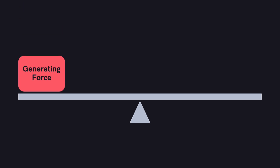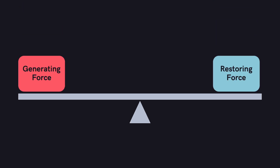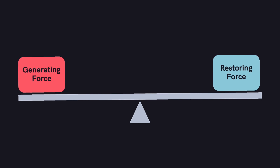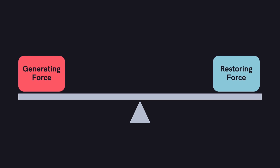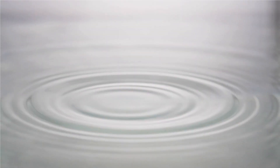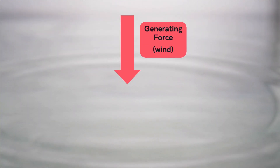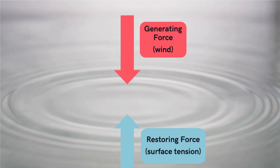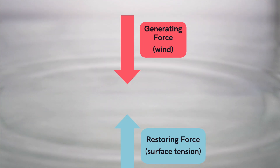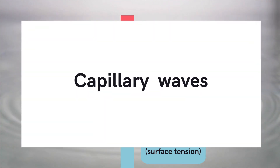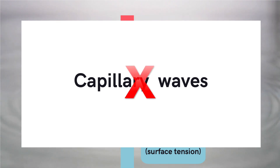We can understand this by the balance of the generating force and restoring force. When a generating force, such as wind, blows on the surface of water, it causes disturbances. If these disturbances are small, the restoring force is the surface tension of the water. Such millimeter-scale waves that are restored by capillarity and surface tension are called capillary waves. We won't be looking at these today.